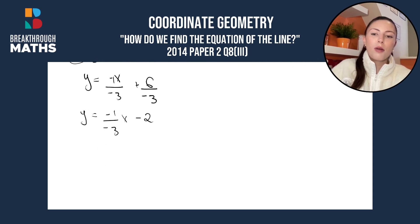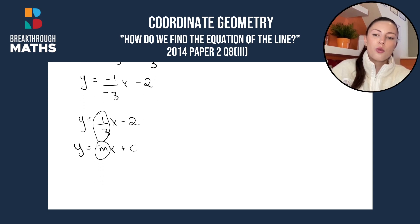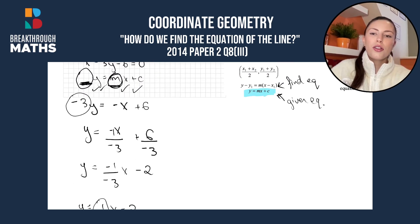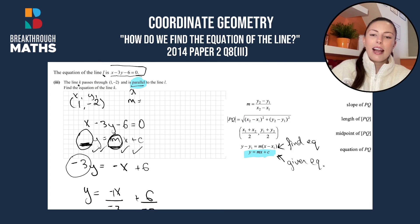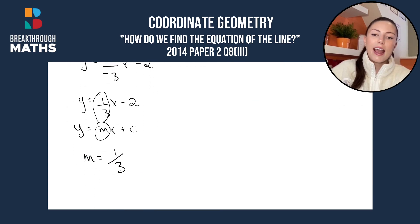The minus and minus cancel out and it becomes 1 over 3x minus 2. Now we can see our equation of the line is in the form y = mx + c. Our m here is 1 third, so the slope of line L is 1 third. Since they are parallel lines, we know that the slope of k is going to equal the slope of L — so line k also has a slope of 1 third.